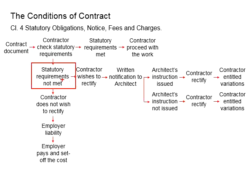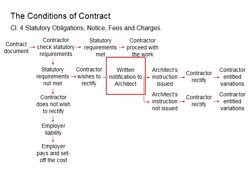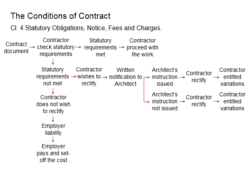If the requirements are not met, it will be up to the contractor whether to rectify or not — though theoretically, rectification must be made. If the contractor wishes to rectify, the contractor will need to send a written notification to the architect, make the architect aware of the issue, and wait for the architect's response on whether to issue architect's instructions.